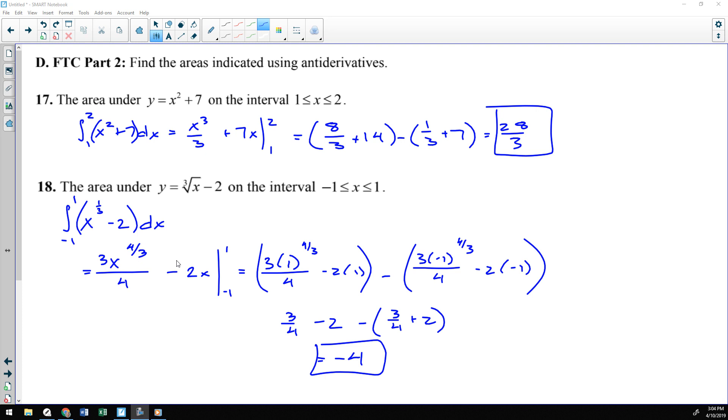There we go. So, that one, once I plugged in and did the arithmetic, ended up being negative four. But you're just doing the antiderivative of the function, and then you plug in your limits of integration and subtract.